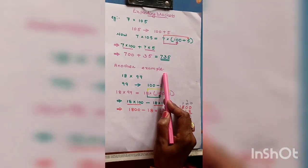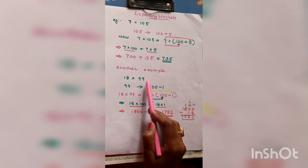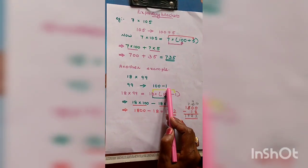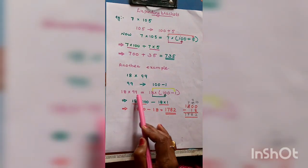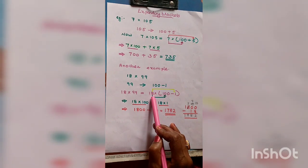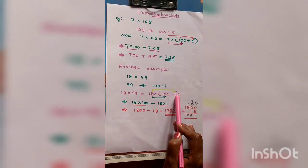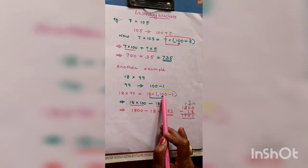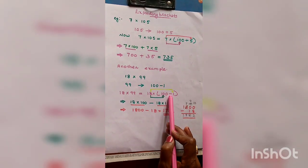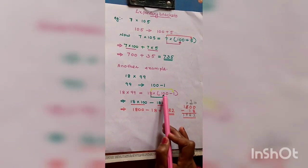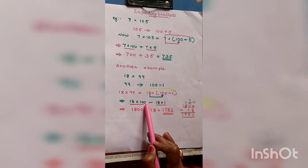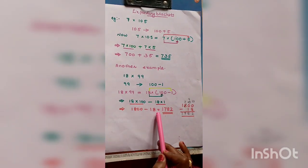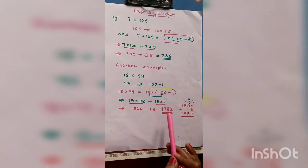Another example: 18 × 99. Since 99 is close to 100, write 99 as 100 − 1. So 18 × (100 − 1). Distribute: 18 × 100 − 18 × 1 = 1800 − 18 = 1,782.